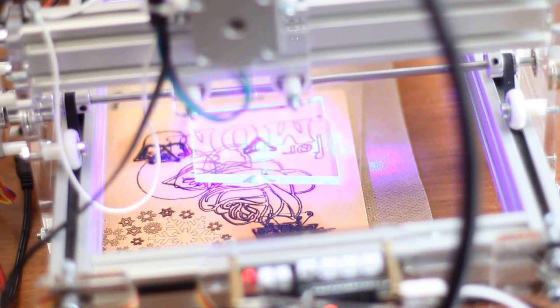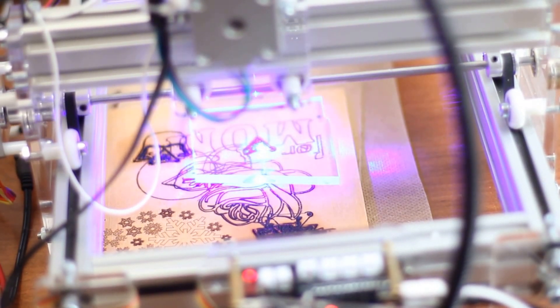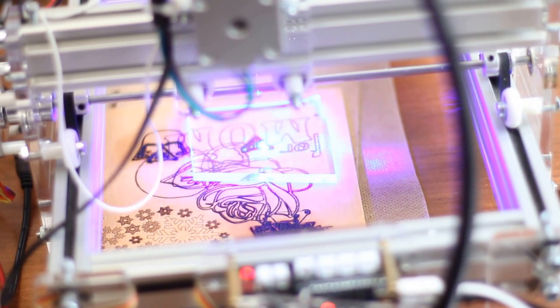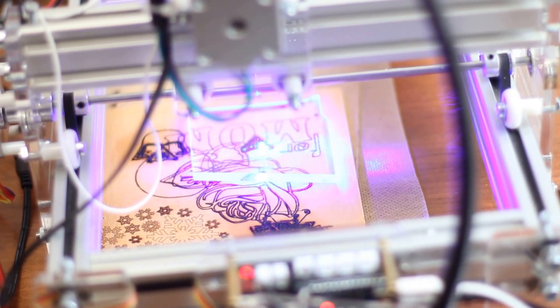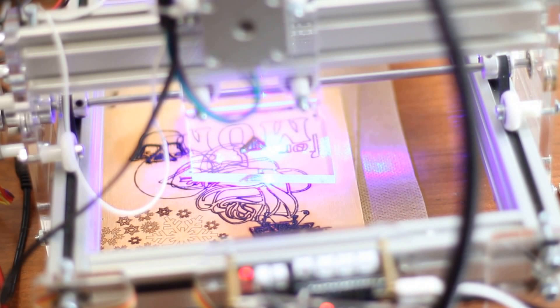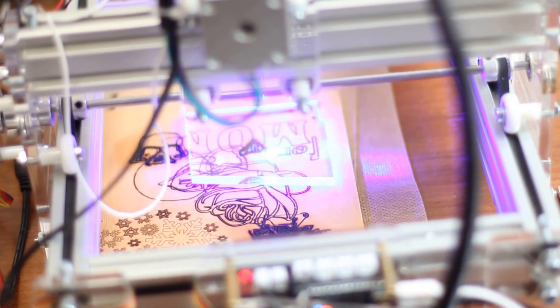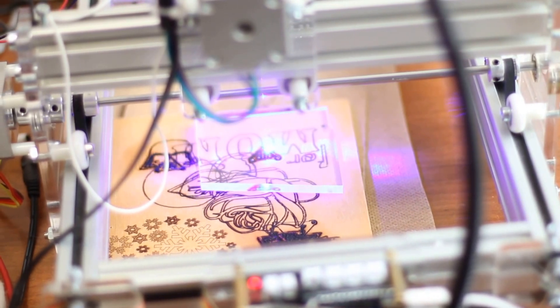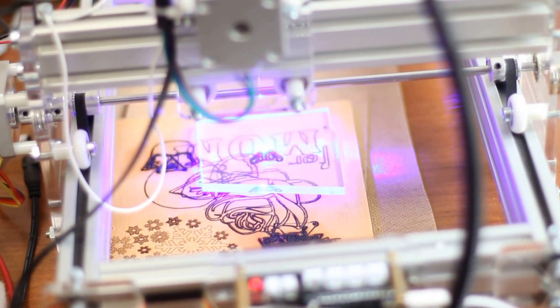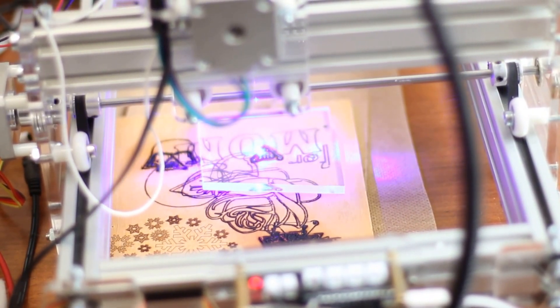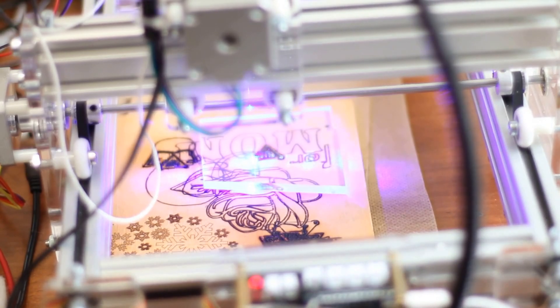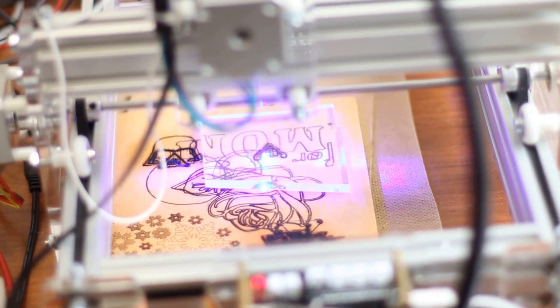So actually what happens is that the laser beam goes straight through acrylic. But you need to engrave it. That's why it heats up a piece of plywood and wood. And this heat, this power actually goes back to acrylic. And acrylic is actually melting. It's not a very difficult process, but it is our small life hack how you can do it.